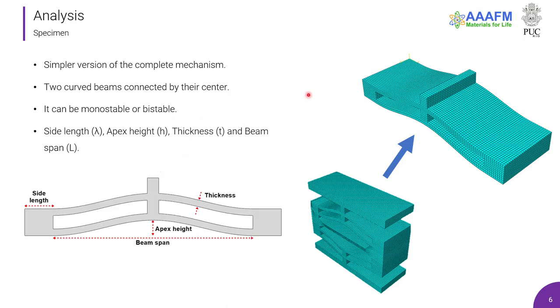Here is the mechanism used in this work, and it's a simpler version of the complete mechanism shown here. It was reduced to decrease processing time and to make the modeling easier. Two curved beams are connected by their center, and this is important because in that way the mechanism can be bistable. If only one curved beam was present, it would not be possible.